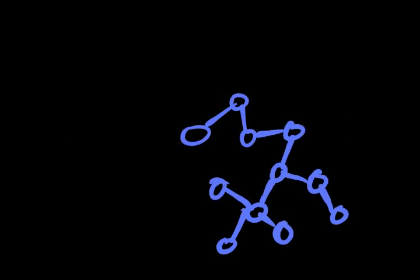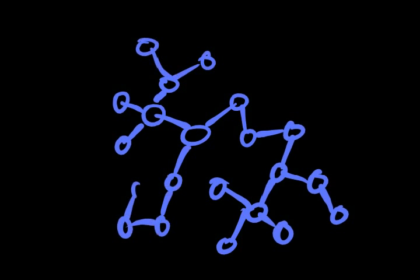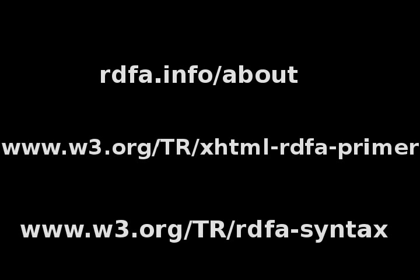The more triples there are on the web, the more computers will be able to understand our world. This means that they will get really good at helping us find news, music, movies, people, and many more of the things that we are interested in. If you would like to learn more, there is an advanced RDFa tutorial that is a continuation of this talk. There is also quite a bit of information available on the main RDFa website, an RDFa primer document for those that want more reading material, and an RDFa syntax document for developers that want to understand how RDFa works.